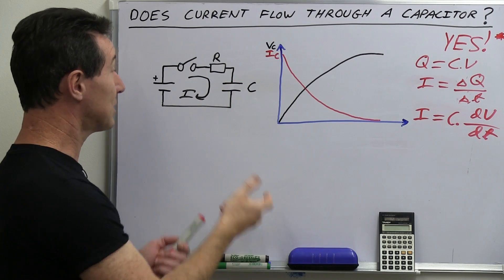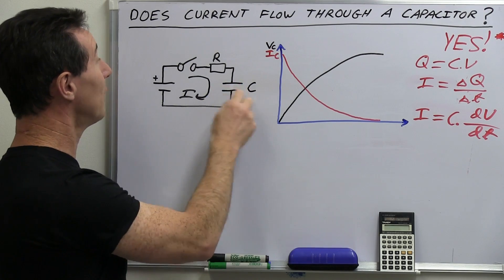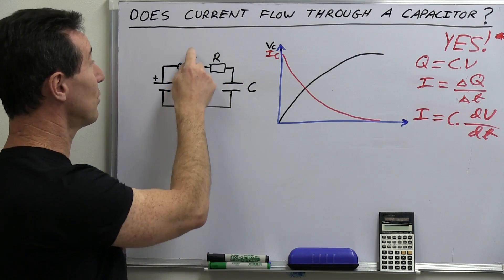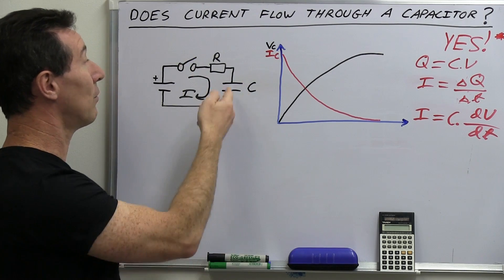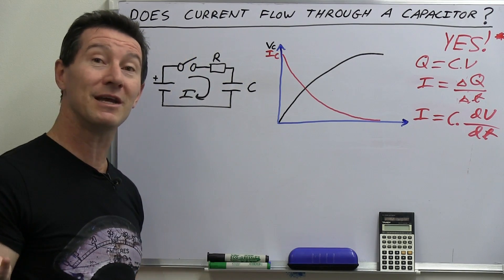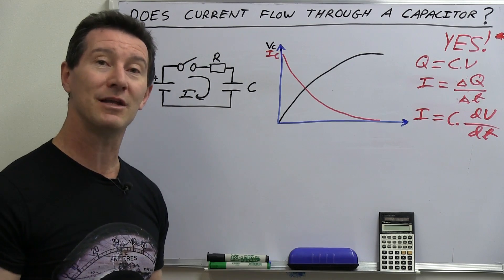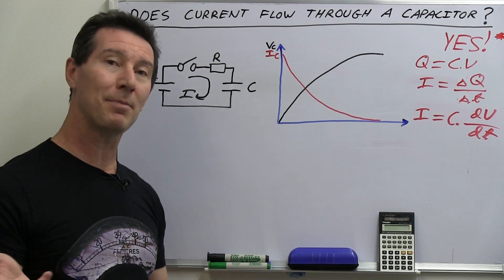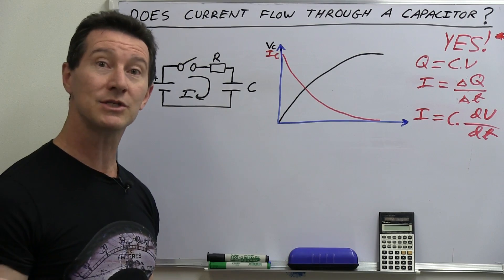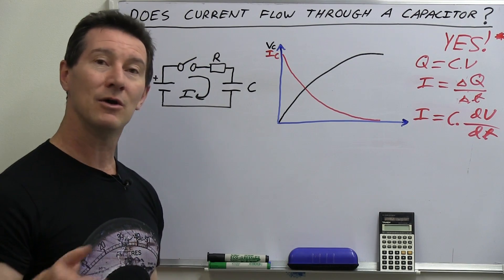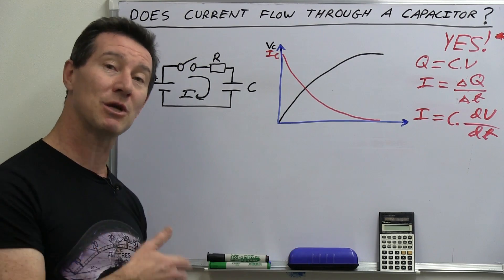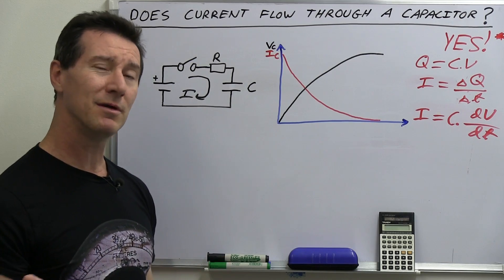But isn't a capacitor just like an open switch? Look, this symbol itself tells you that there's a break. What's the difference between a switch symbol and a capacitor symbol? They're identical, right? And that comes down to what you basically know about capacitors. They block DC and they allow AC or changing currents to pass through them.